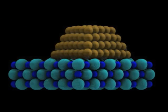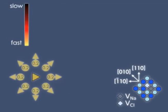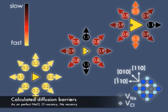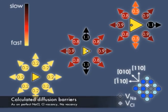In all, the calculations predict that a gold cluster will move very differently depending on what is underneath it on the surface. On the perfect surface, gold is highly mobile, and on a sodium vacancy, it strongly prefers the 110 surface direction.